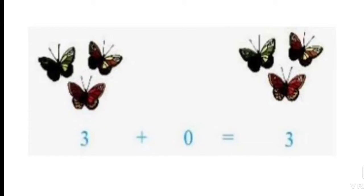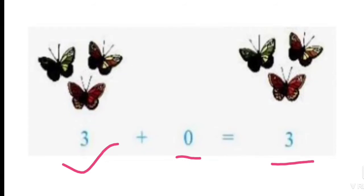Look at this picture. How many butterflies are there? There are three butterflies and we add zero butterflies. So how many butterflies do we get? We get three butterflies.